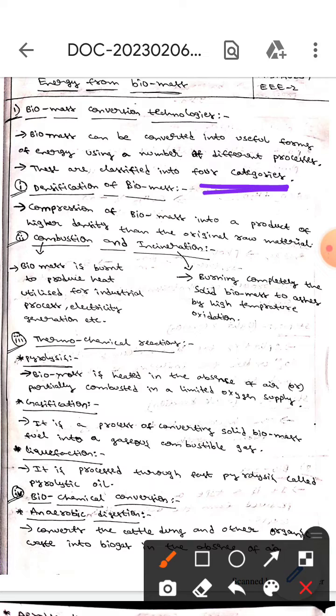They are classified into four categories. The first one is densification of biomass - here, compression of biomass into a product of higher density than the original raw material.